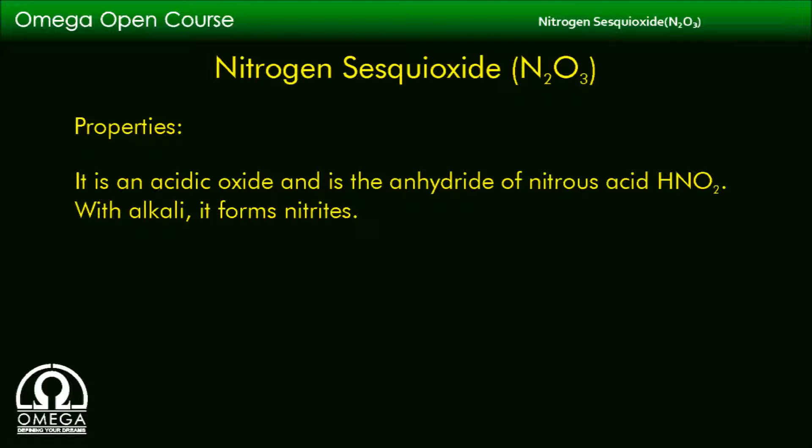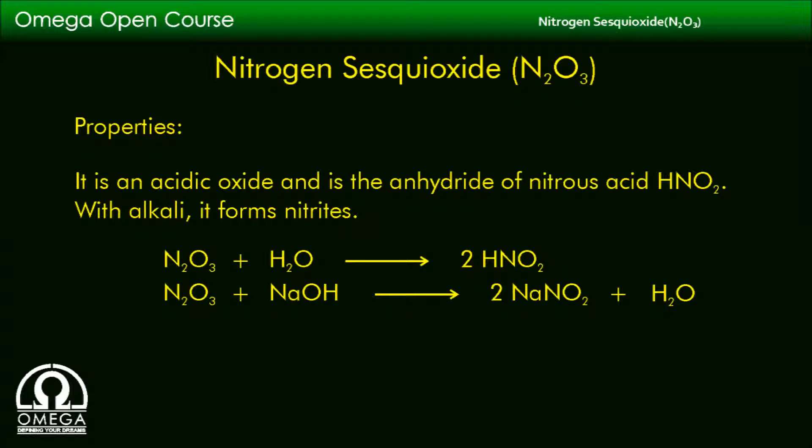N2O3 is an acidic oxide and is the anhydride of nitrous acid, HNO2. With alkali, it forms nitrites. The related reactions are: N2O3 + H2O → 2HNO2, and N2O3 + NaOH → 2NaNO2 + H2O.